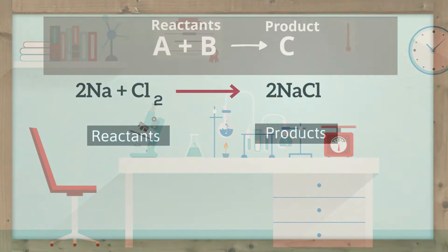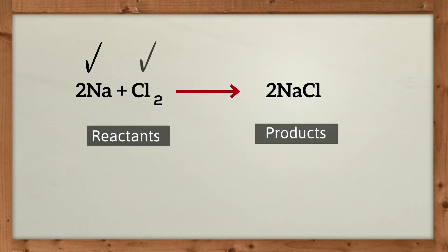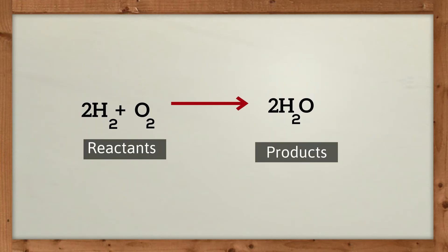An example of a synthesis reaction is the combination of sodium and chlorine to produce sodium chloride, which is commonly known as salt. Another example is a combination of hydrogen and oxygen, which combine to create water.